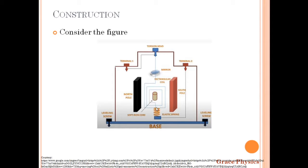The lower end of the suspension wire is connected to a hair spring. The upper end is connected to the torsion head, and from that it is connected to terminal 1. The hair spring forms terminal 2. Inside the rectangular copper coil, there is a soft iron core placed in order to make the magnetic field radial.